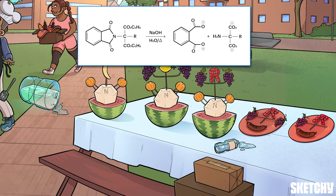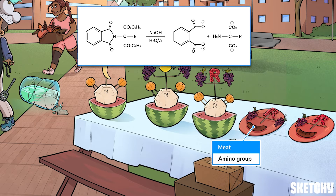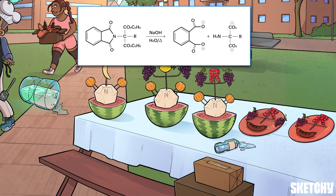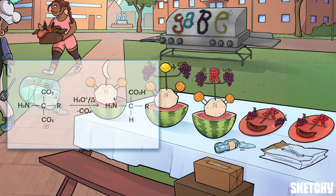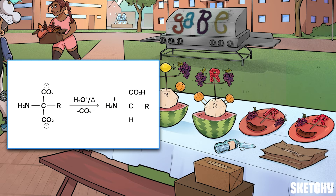We've placed a proteinaceous sausage link on the plate to serve as a reminder of the amino group — gotta love the good ol' sausage-grape combo. At this point, we've got a molecule that almost resembles an amino acid, but we need one of those carboxyl groups to magically turn into a hydrogen. Well, poof — just like magic!